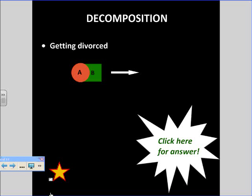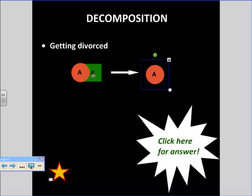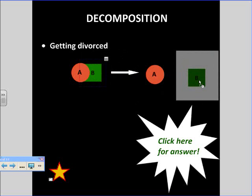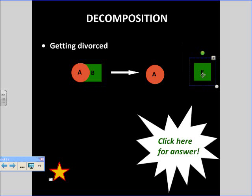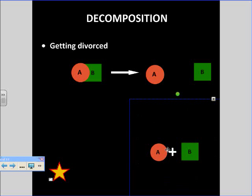Show us how A and B split apart. A goes on one side, B goes the other way, and there's a plus sign between them — so they were together, but now they're going to be separate. Decomposition — think of it like a divorce.